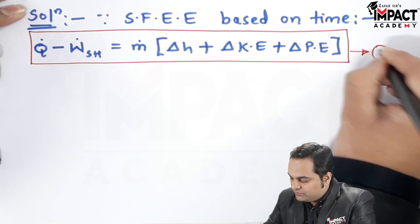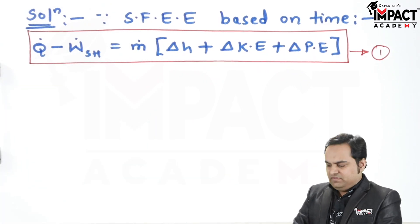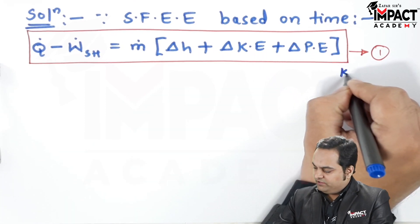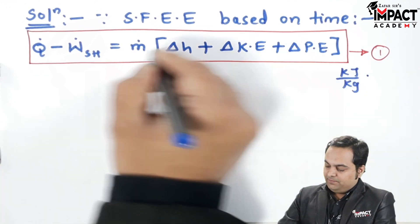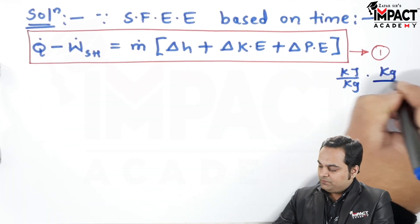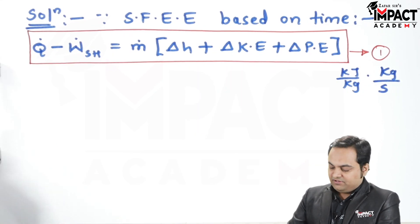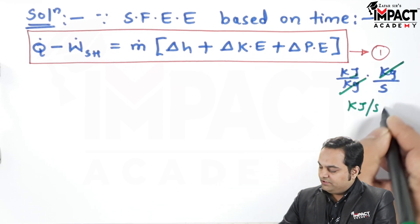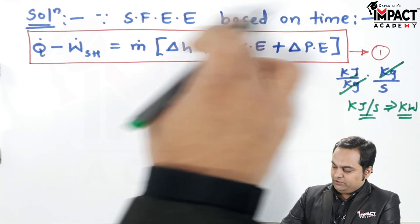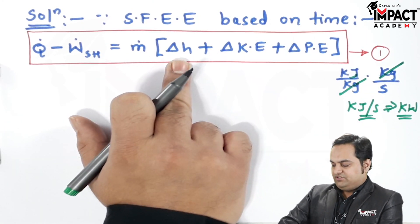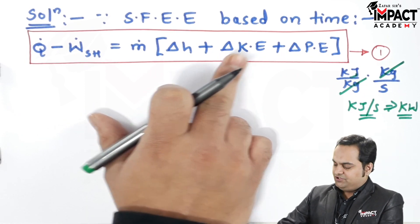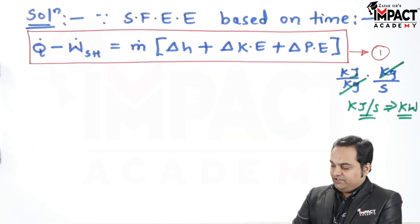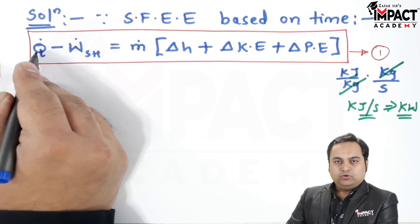This is equation number one. Remember that whatever terms are inside the bracket — change in enthalpy, change in kinetic energy, and change in potential energy — must have units of kilo Joule per kg. When kilo Joule per kg is multiplied by mass flow rate in kg per second, kg cancels and we get kilo Joule per second, which is kilowatt. Now I'll find each term one by one, starting with Q-dot, the heat transfer.